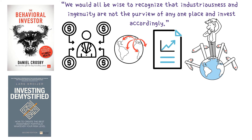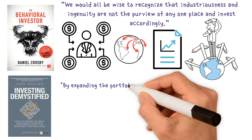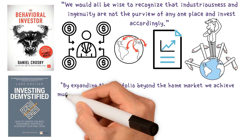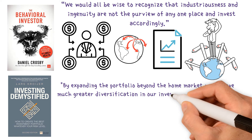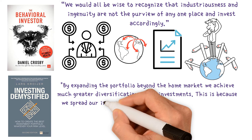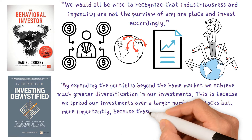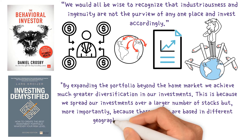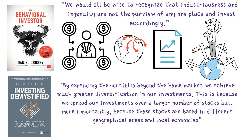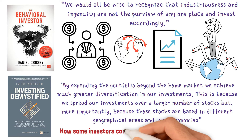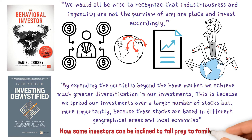Lars Kreuger, author of Investing Demystified, states: "By expanding the portfolio beyond the home market, we achieve much greater diversification in our investments. This is because we spread our investments over a larger number of stocks, but more importantly, because those stocks are based in different geographical areas and local economies." So that's home bias — the first example of how some investors can be inclined to fall prey to familiarity bias.